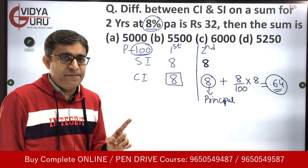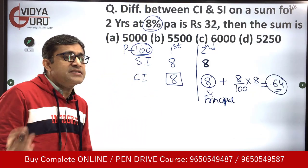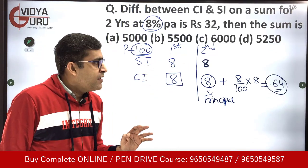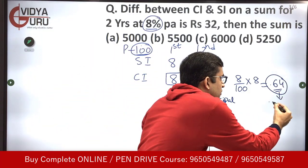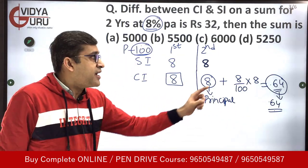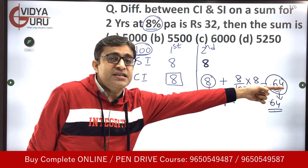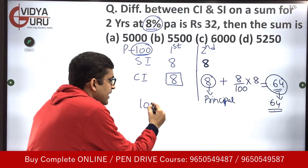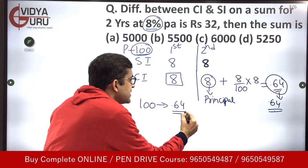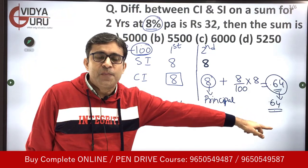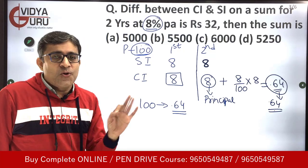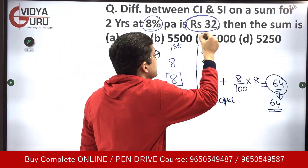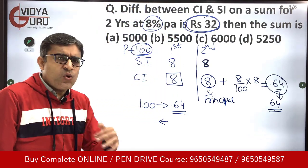So if the principal was 100 rupees, the difference in the interest between compound and simple interest is 64 paisa. This 0.64 is the extra interest earned in case of compound interest. But we have to find out the principal — the original difference given is 32 rupees, not 64 paisa. So now we will use the unitary method.